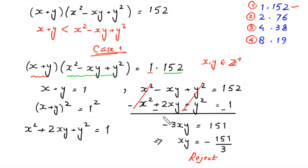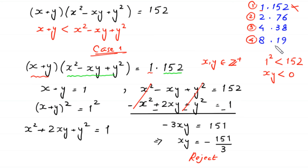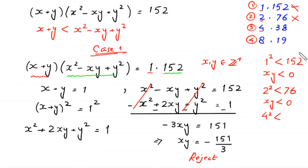We notice that when the square of the first factor is less than the second factor, xy will be negative. For Case 2 (2×76): 2² = 4 is less than 76, so xy is negative — no solution. For Case 3 (4×38): 4² = 16 is less than 38, so xy is negative — no solution. For Case 4 (8×19): 8² = 64 is greater than 19, so xy will be greater than 0 — this case may have solutions.